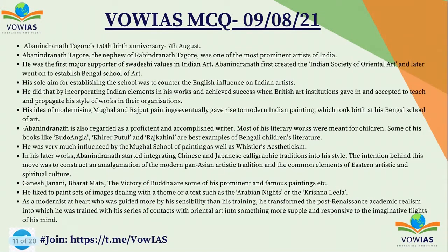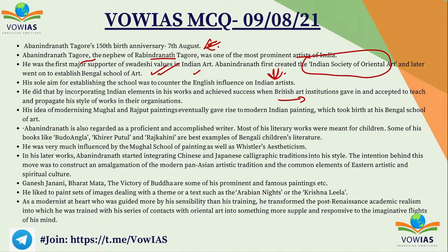Recently the 150th birth anniversary of Abanindranath Tagore was celebrated on 7th of August. Don't confuse — this is not Rabindranath; it is Abanindranath, who is the nephew of Rabindranath Tagore. He was the first major supporter of Swadeshi values in Indian art. He first created the Indian Society of Oriental Art and later went on to establish the Bengal School of Art. The main aim of this school was to counter the English influence on Indian artists by incorporating Indian elements in his artwork.